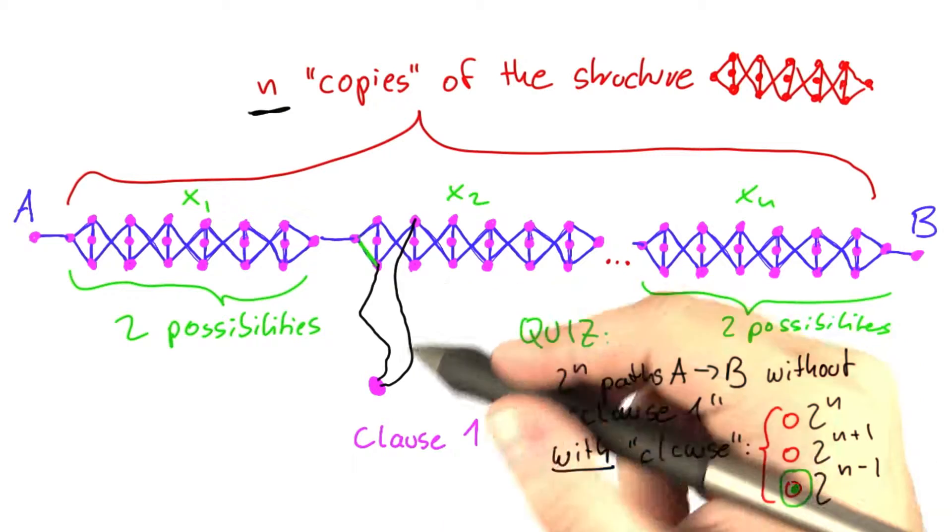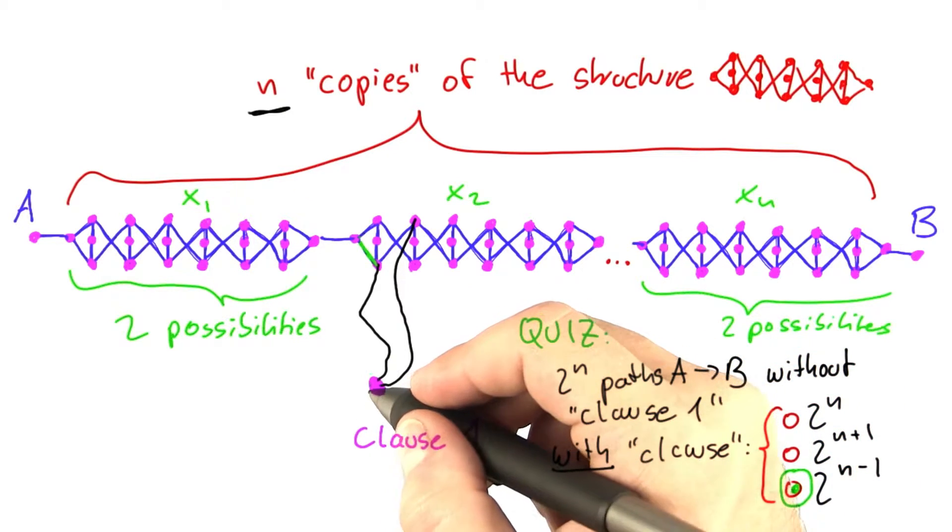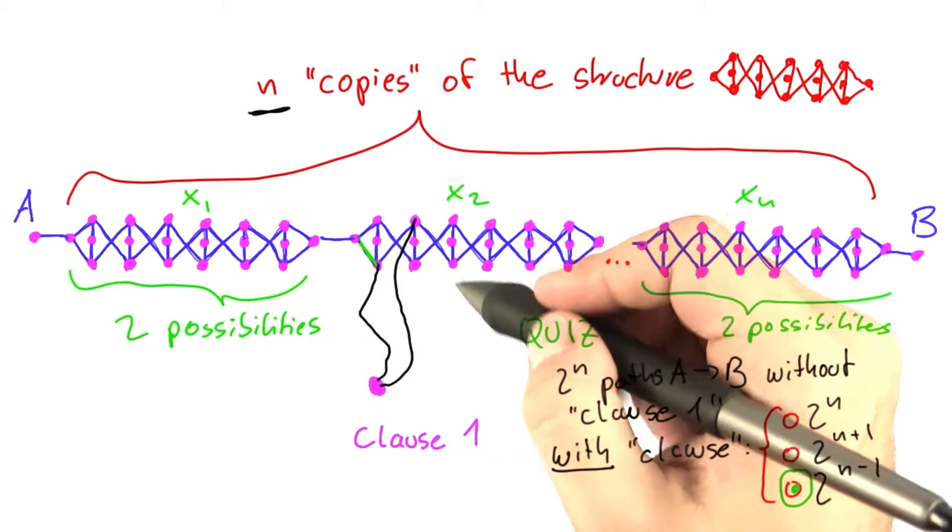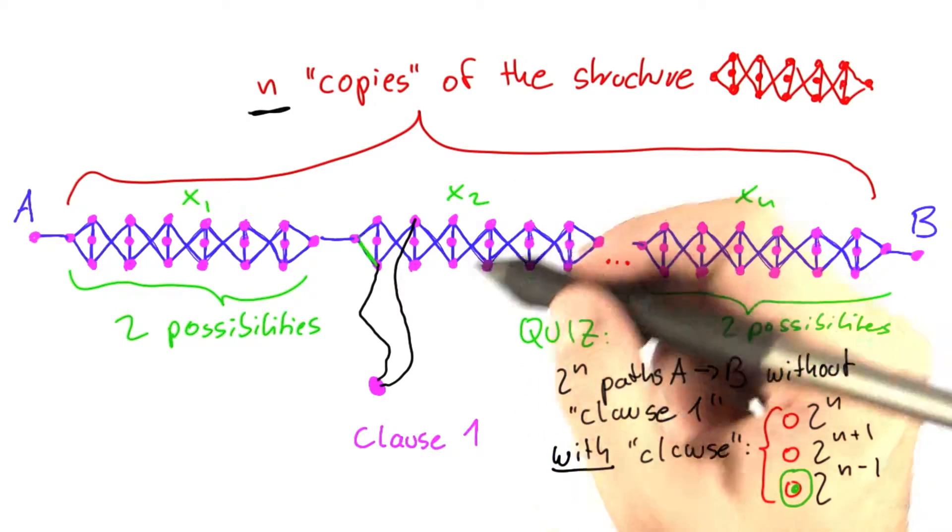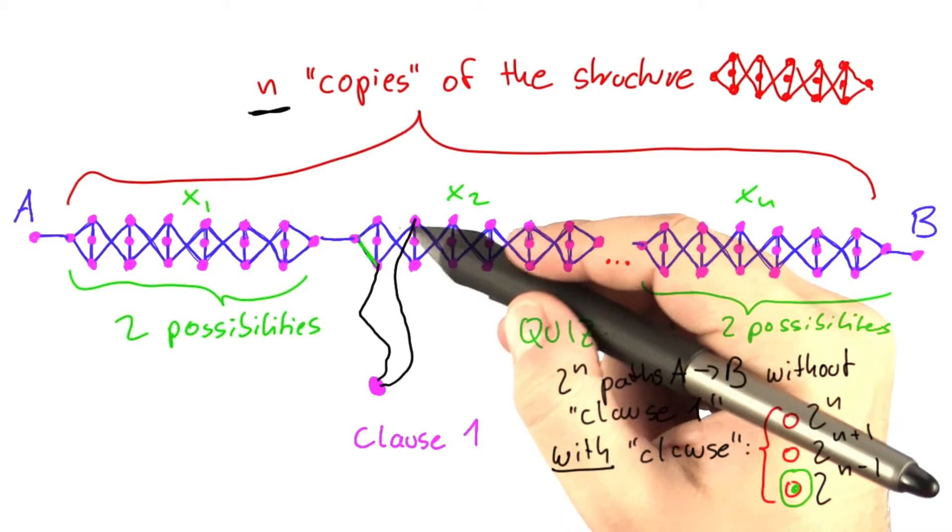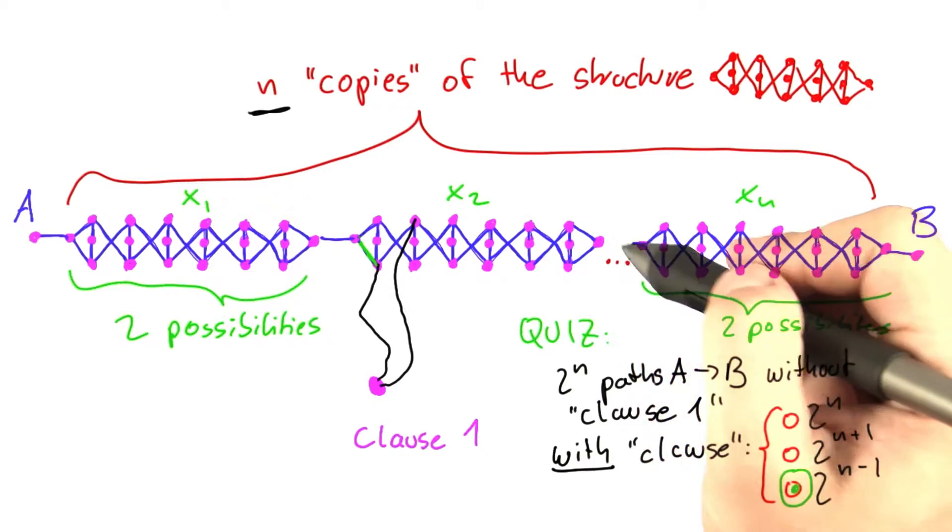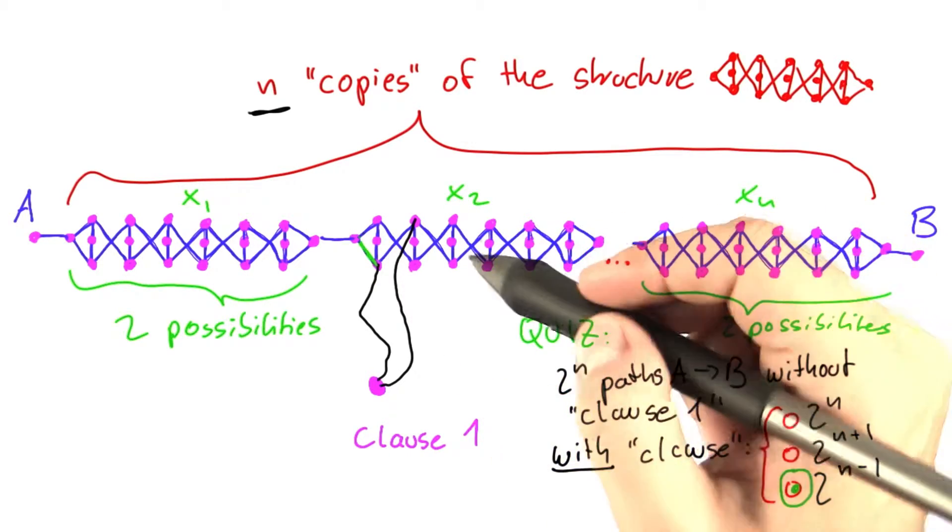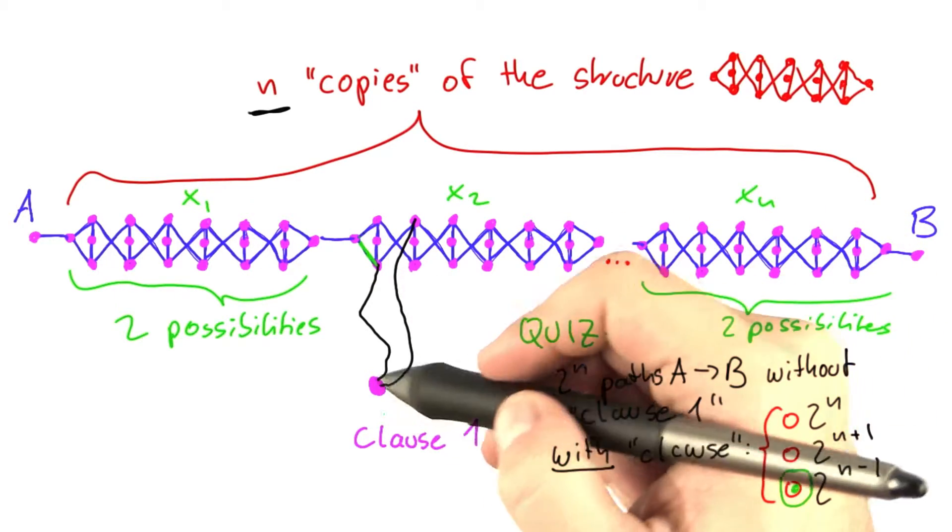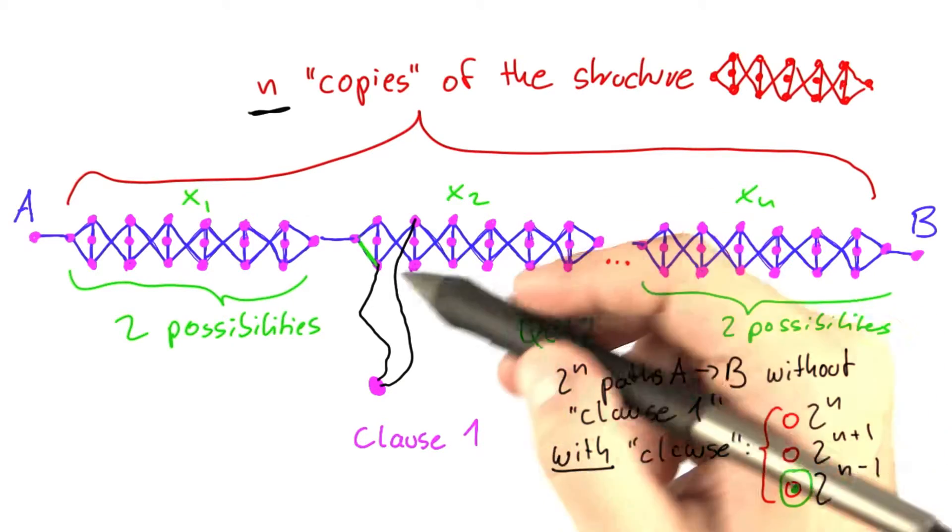Because that means we can only visit this vertex here on a shortest tour if we are going the right way. And now you can already see the relationship. If we connect this clause here to this part here, which represents a variable in the right way.